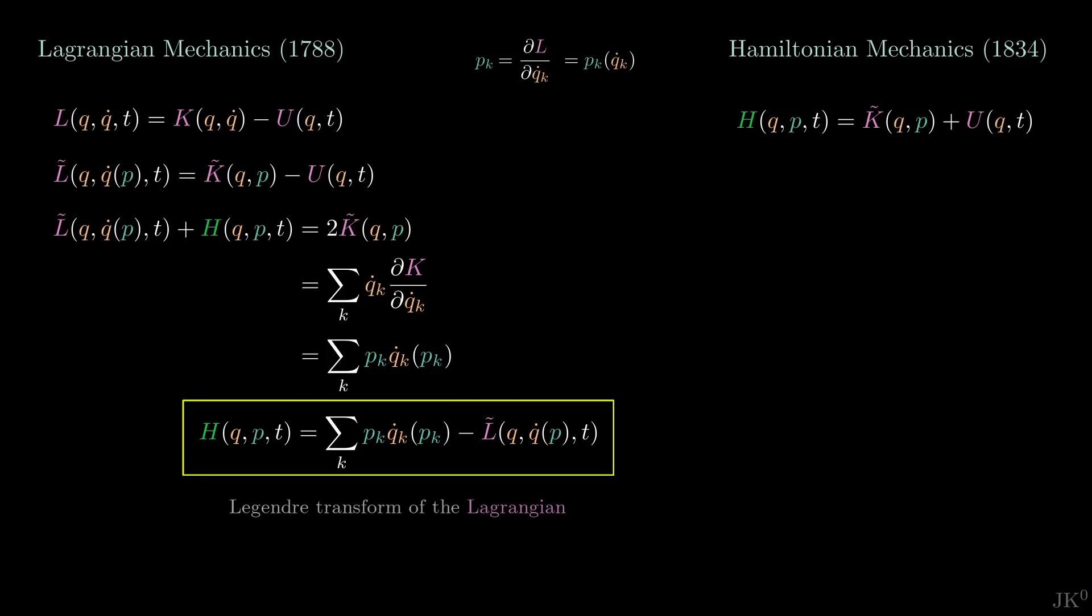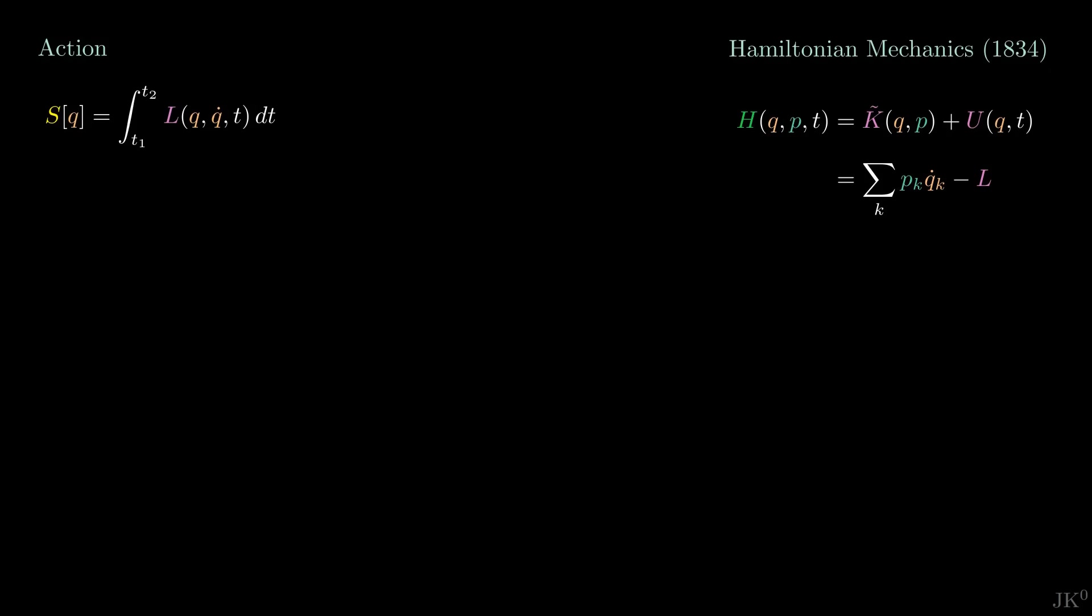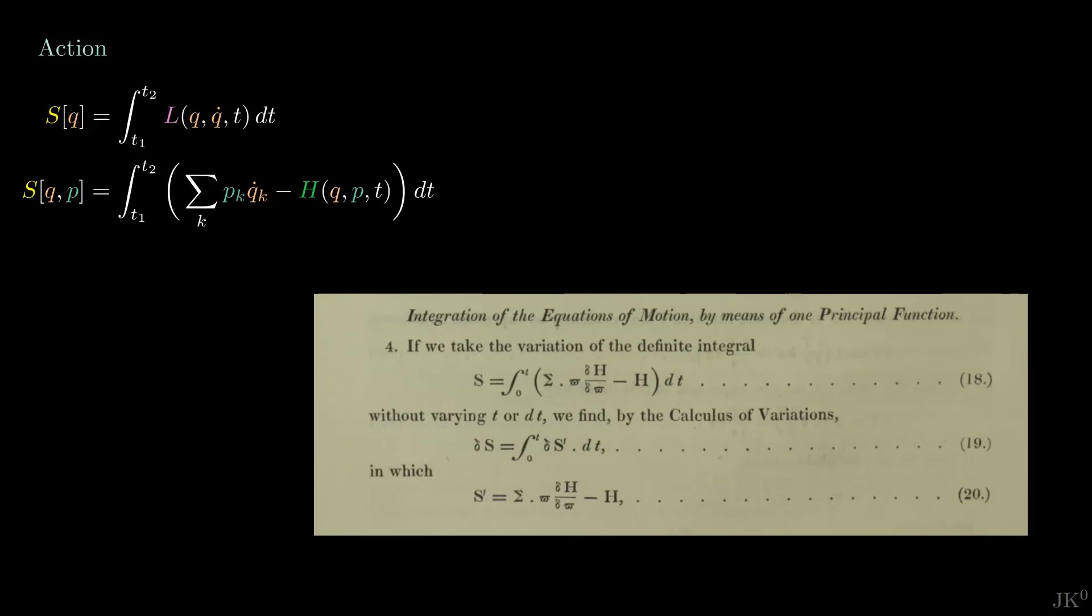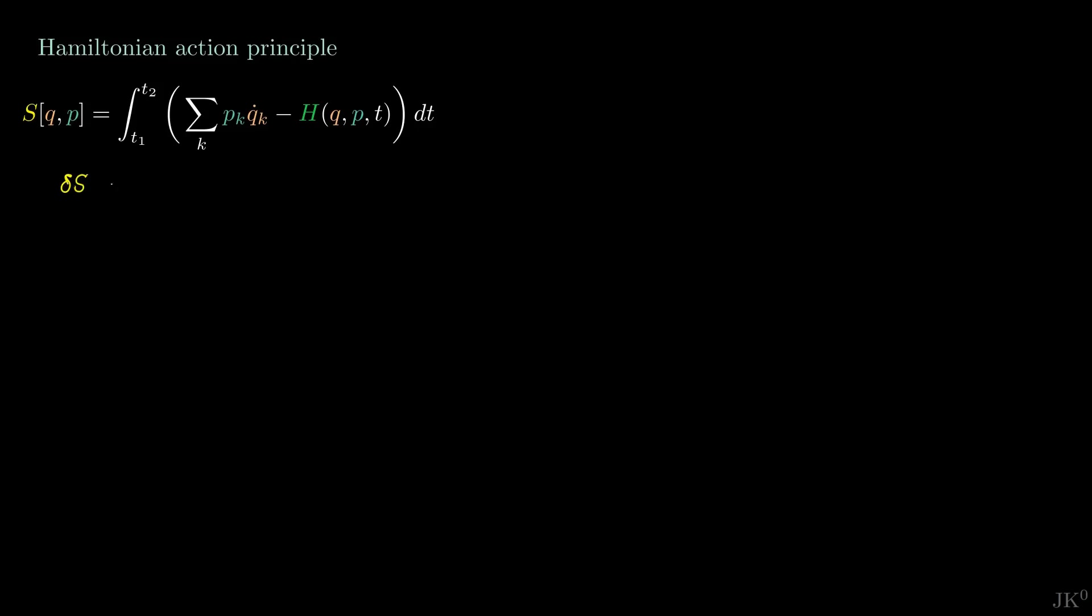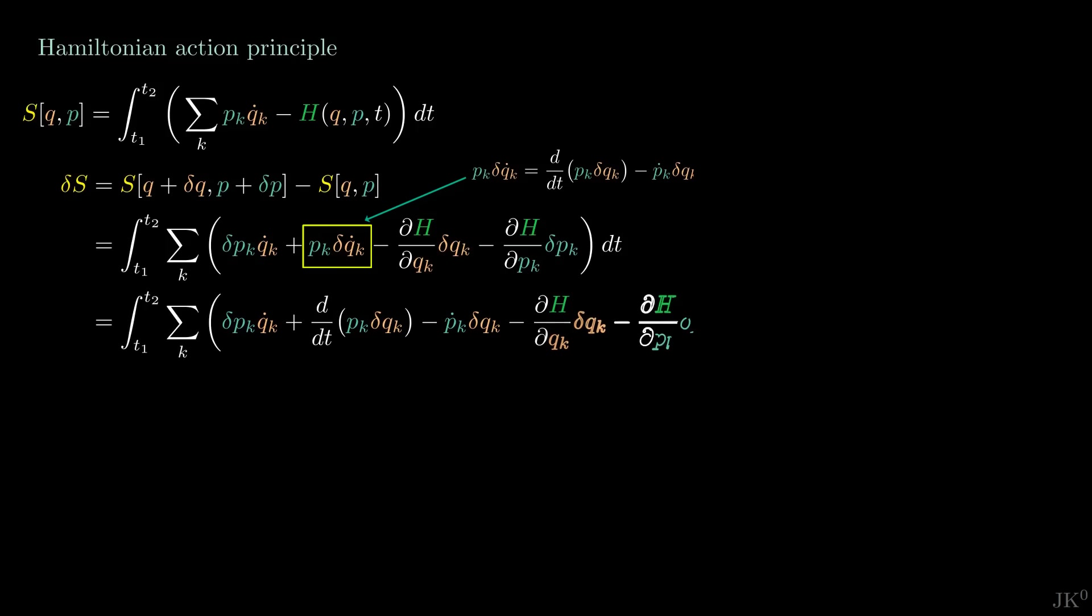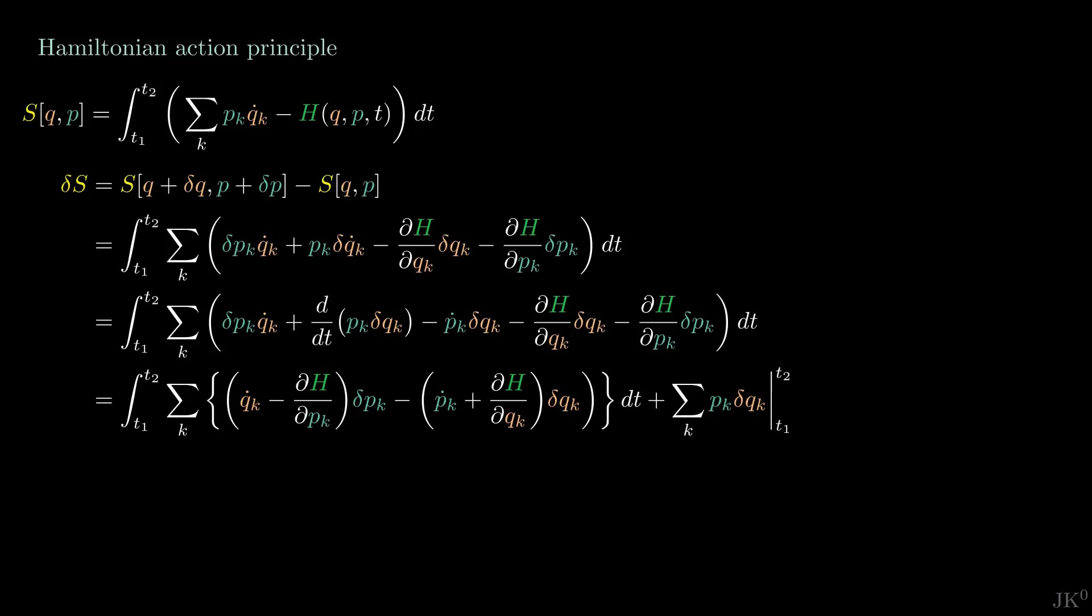Now that we can relate the Lagrangian and the Hamiltonian, the action can be extended to depend on q and p in this form. Hamilton writes the action in a slightly different way, but it is not hard to confirm that this term is just our q-dot. The principle of stationary action now requires the action to be stationary under infinitesimal variations of both q and p, which at leading order takes this long form using a Taylor expansion. Now we use the old trick of the derivative of a product to replace q delta q-dot by these two terms. Grouping common factors and using the fundamental theorem of calculus to take the total derivative out of the integral, we get this.